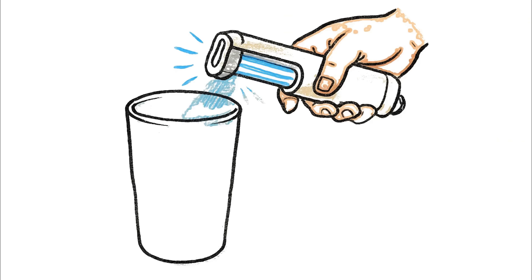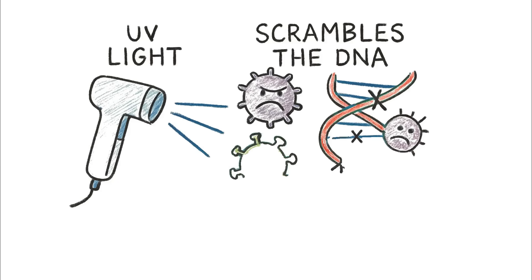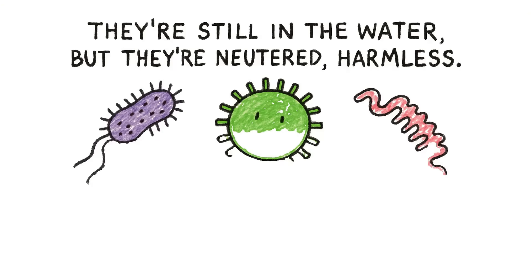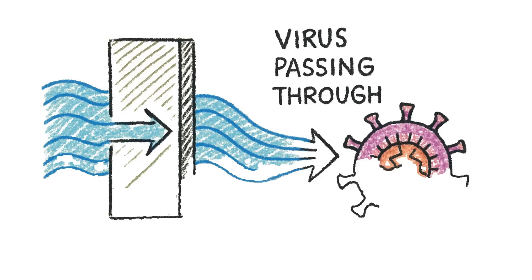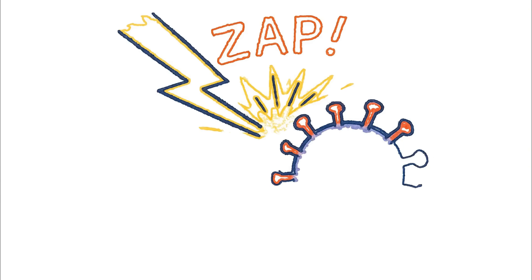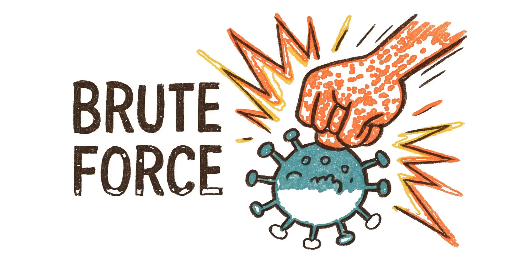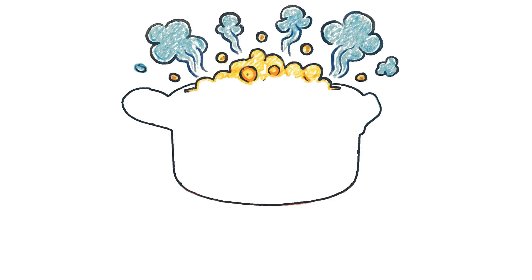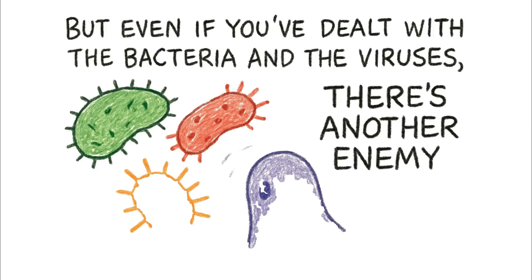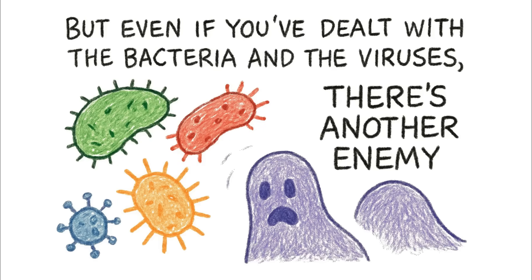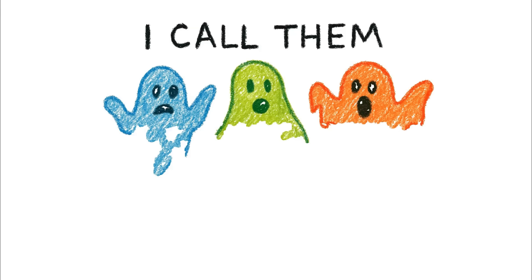A portable UV light sterilizer is a surgical strike. It scrambles the DNA of these pathogens so they can't replicate. They're still in the water, but they're neutered, harmless. Imagine that filter failing, the virus passing through — then a flash of unseen light zaps it, rendering it inert. And of course there's the old way, brute force: a rolling boil will tear their proteins apart, killing them dead. But even if you've dealt with the bacteria and the viruses, there's another enemy — one you can't see, can't taste, and can't boil away. I call them the Ghosts.